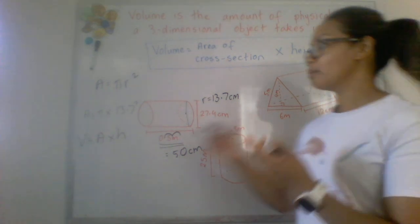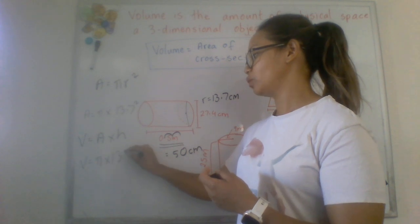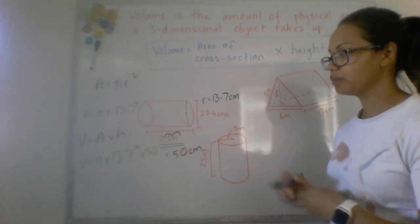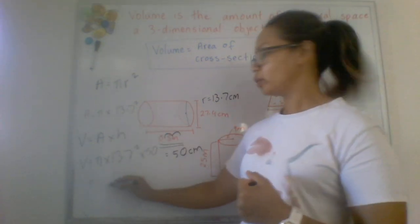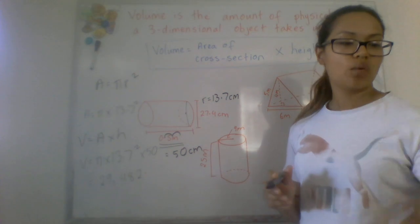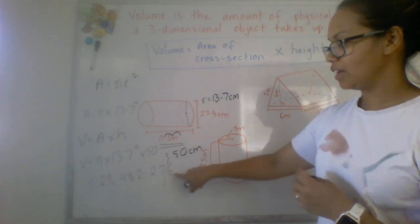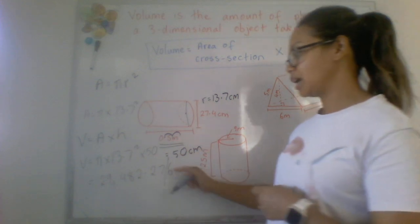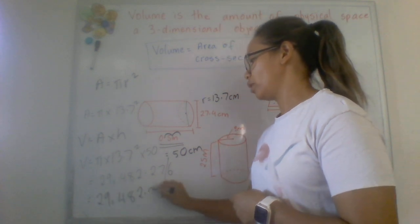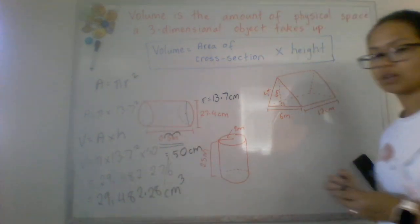So putting that all in one my volume would be my area which is pi times 13.7 squared multiplied by 50 which is the depth or the height of that shape. Putting that into our calculator we get 29,482.276. We usually do it to about two decimal places, that's five or above so I give that a shove, it becomes 29,482.28 centimeters cubed because we are dealing with volume.